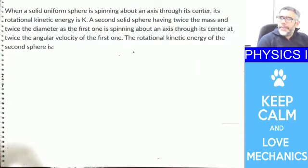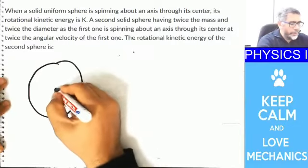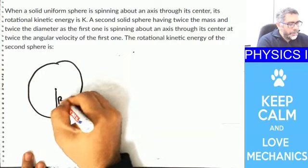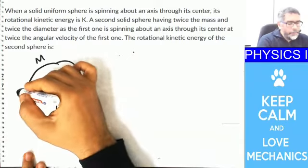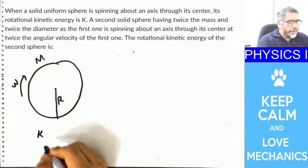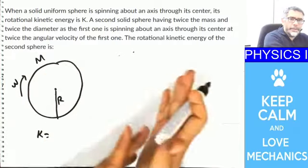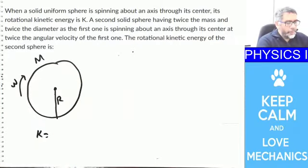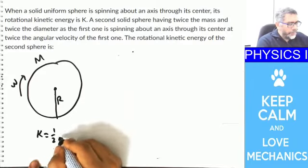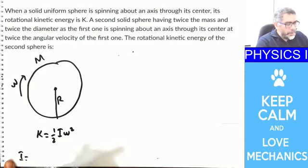Next: when a solid uniform sphere spins about an axis through its center, its rotational kinetic energy is K. Let's draw a sphere with radius r and total mass m, spinning with angular velocity ω. This is the first sphere with kinetic energy K. The kinetic energy of a rotating sphere is one-half I ω squared, and the moment of inertia for a sphere is 2/5 m r squared.